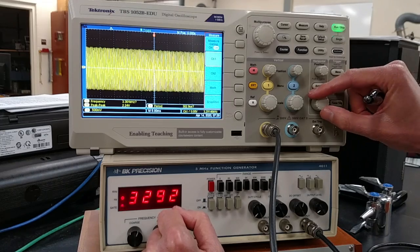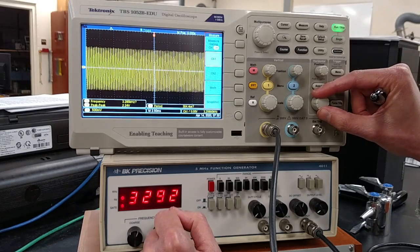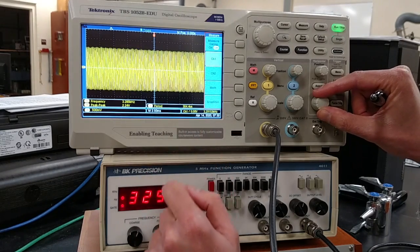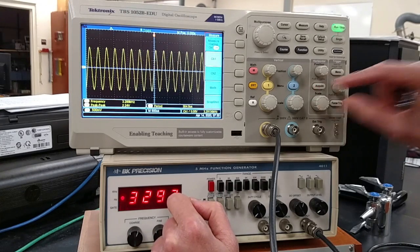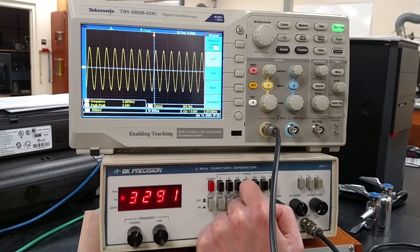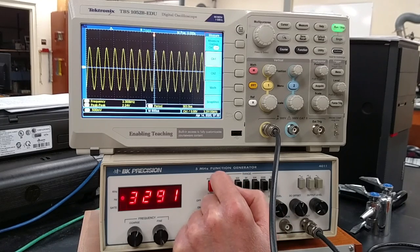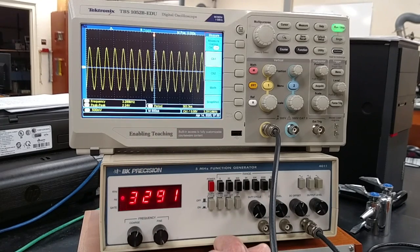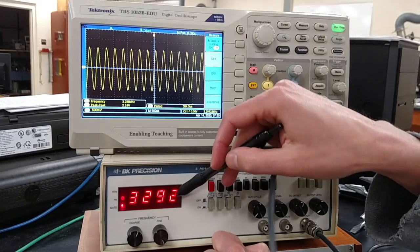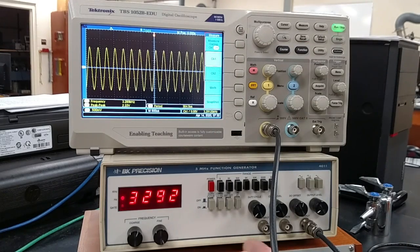We can change the range from five milliseconds to 500 microseconds. Now it finds the frequency in agreement with the output of the function generator.